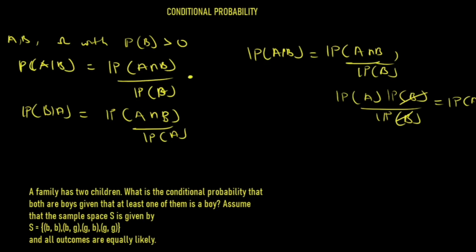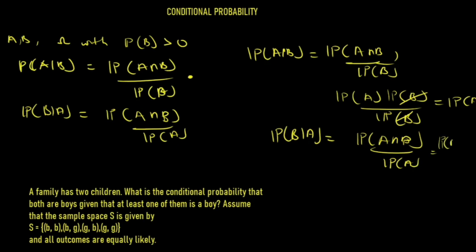Similarly, finding P(B|A) gives us P(A∩B) over P(A). Under independent events, this becomes P(A)·P(B) over P(A), which cancels to give P(B). So under independence, P(B|A) equals P(B). It is very important to know this conditional probability.